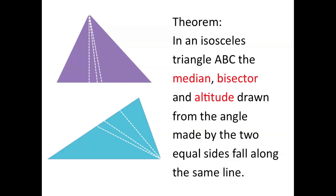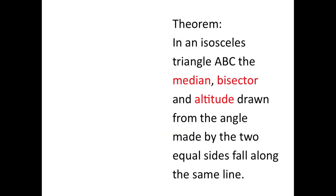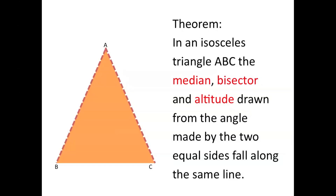Let's look at an example. We have triangle ABC where AB equals AC, making it an isosceles triangle since two sides are equal. We're going to prove that the median, bisector, and altitude drawn from angle A all fall on the same line. To begin, we draw the median of triangle ABC. Let D be the midpoint of side BC, and we draw the median line from A to D. Now we want to prove that AD is also the bisector and the altitude.